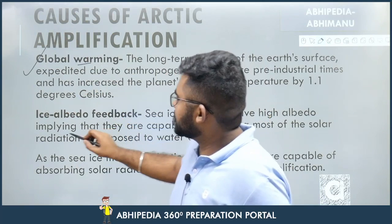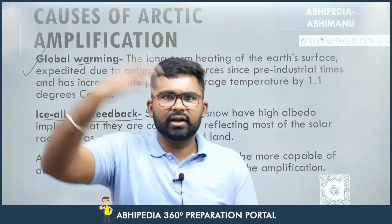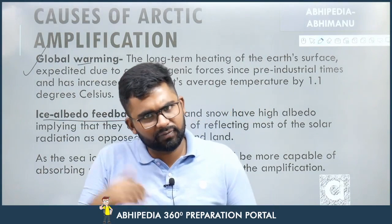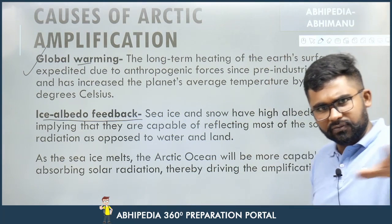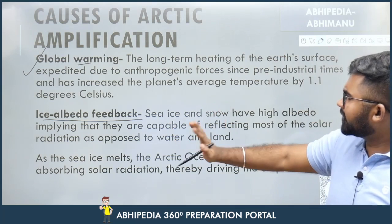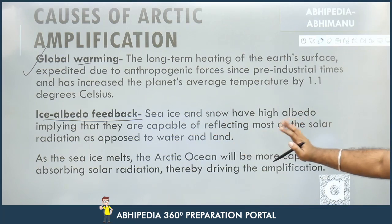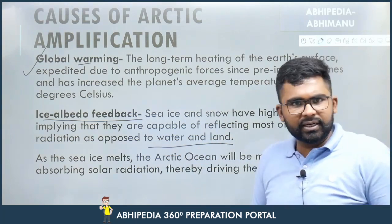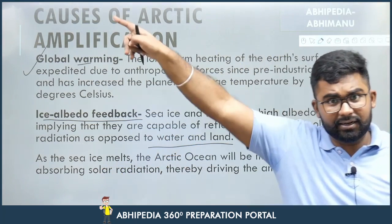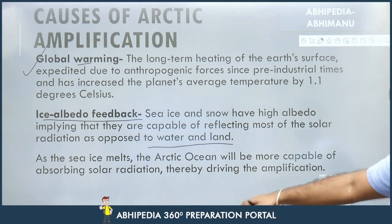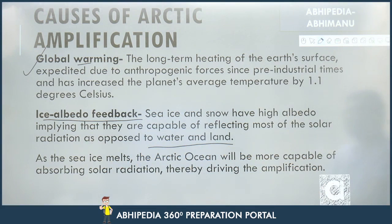The second cause is ice-albedo feedback. Albedo refers to how much light gets reflected back — if light is reflected, it is not being absorbed. Sea ice and snow have high albedo, meaning they reflect more solar radiation. Water and land, by contrast, tend to absorb it. As sea ice melts due to global warming, the Arctic Ocean becomes more capable of absorbing solar radiation, thereby driving further amplification.